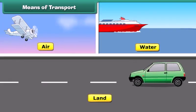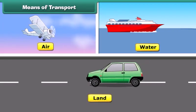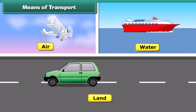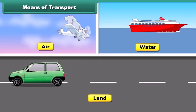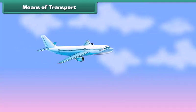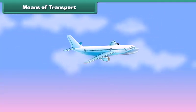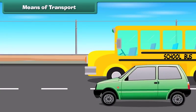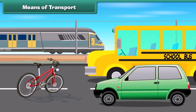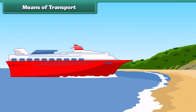Do you know that transport is carried out through various modes such as land, water and air? The vehicles used in these modes are not the same — they are different from one another. For example, airplanes fly in air, buses, cars, bicycles and trains move on land, and ships move in water.